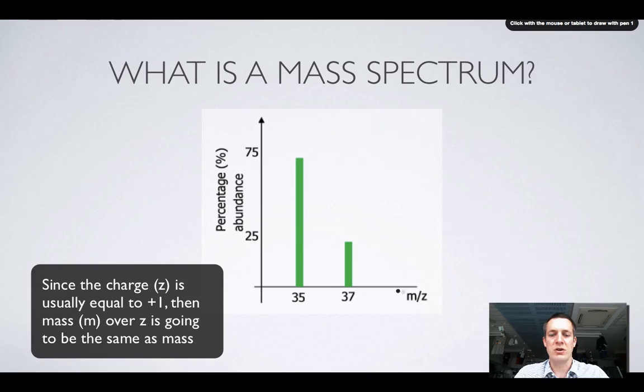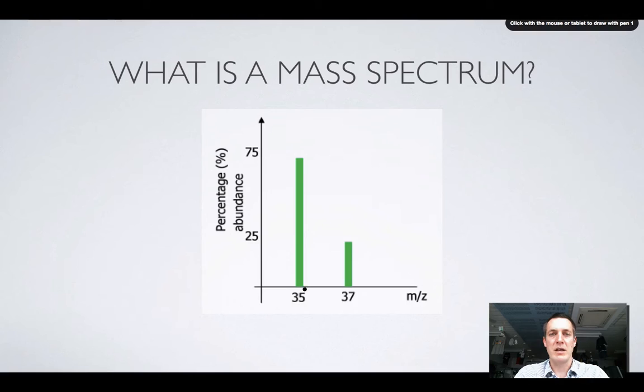So although it says m over z, which means mass charge ratio, these are basically the same as the mass of the particles. So there were particles with a mass of 35 traveling in this mass spectrometer that gave us this mass spectrum, and there were particles with a mass of 37,